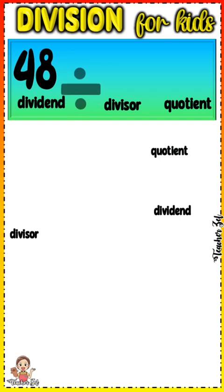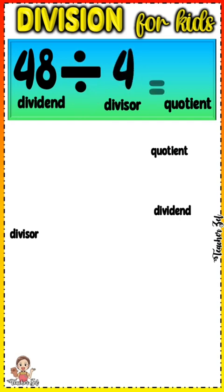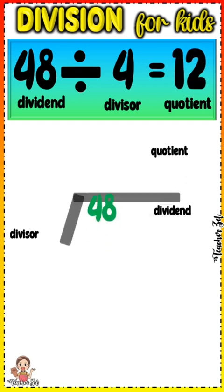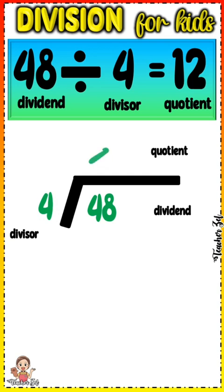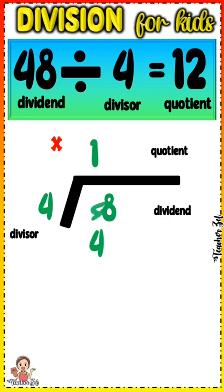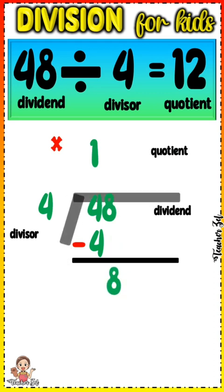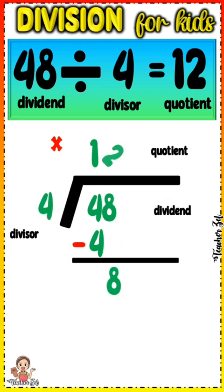48 divided by 4 equals 12. 4 divided by 4 equals 1. 1 times 4 equals 4. 4 minus 4 equals 0. Bring down 8.